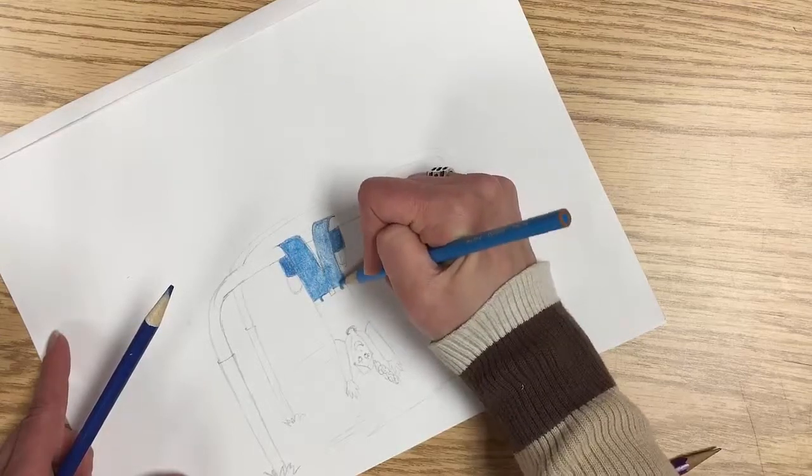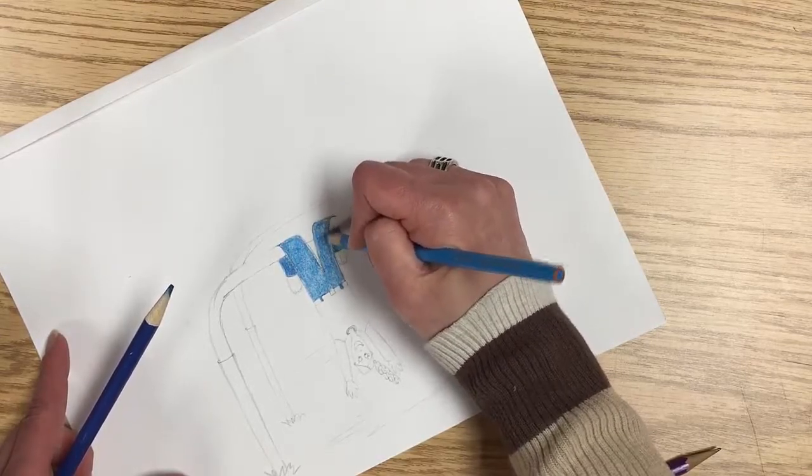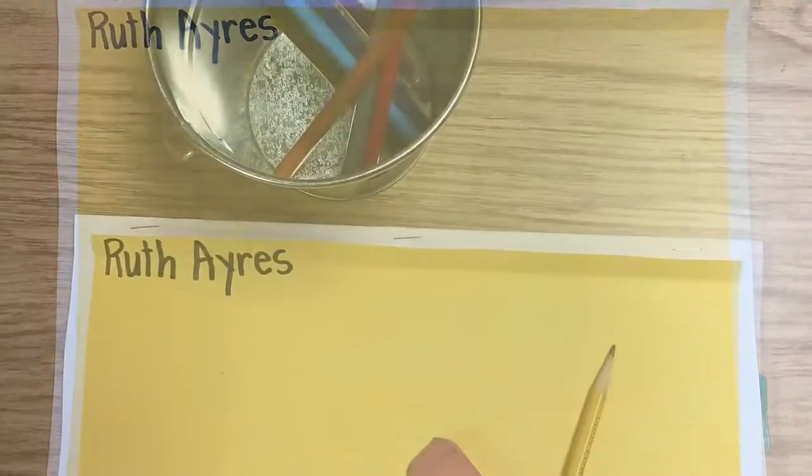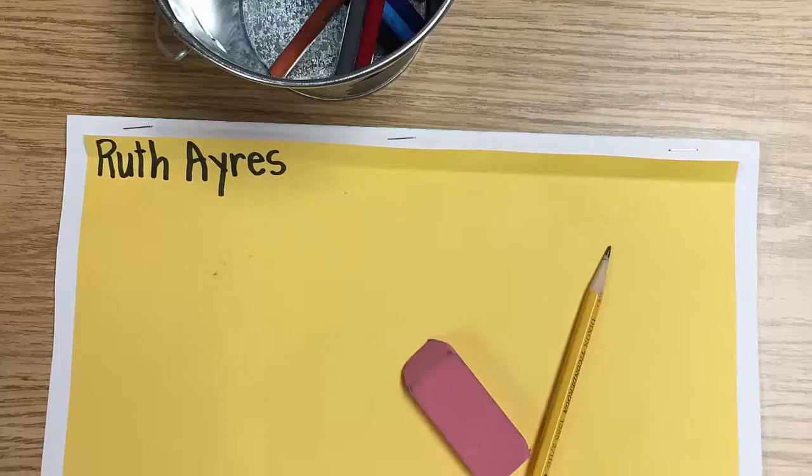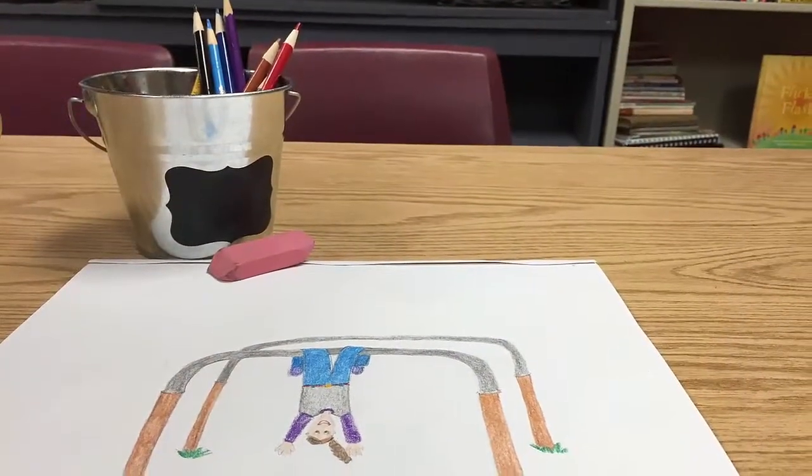Today during writing workshop, why don't you see if you can put a part of your story on paper? Grab some paper and your supplies, colored pencils, a sketch pencil, and an eraser. And find a spot where you can work.